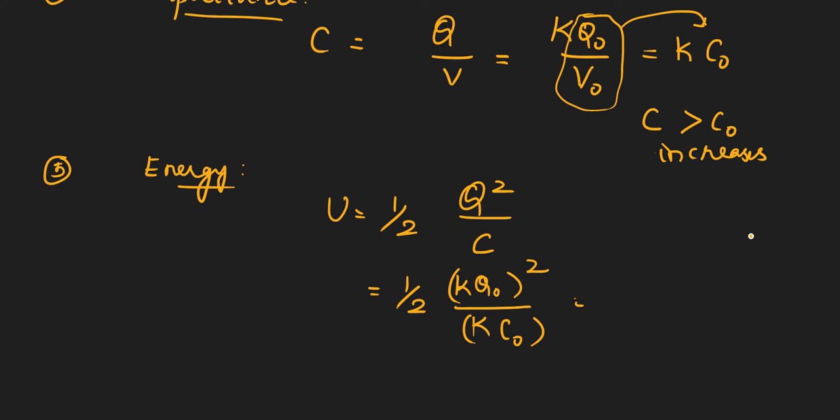So now we can write this as half, one K, one K will go away. We can write KQ0 squared divided by C0 which will be KU0, because half Q0 squared divided by C0 is U0 only.